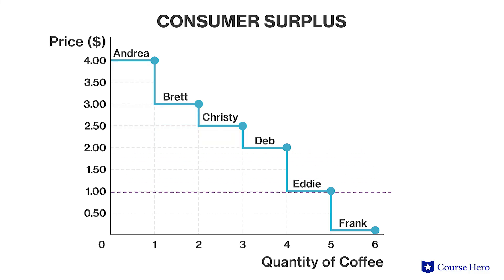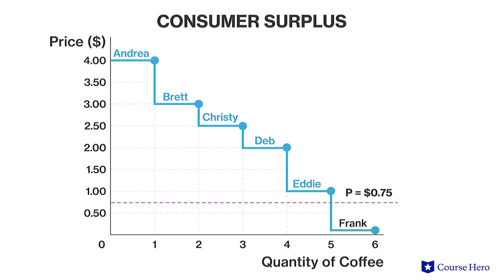If the price falls to 75 cents, there would be five individuals willing to buy a cup of coffee. Andrea, Brett, and Christie would still be interested in purchasing the coffee because they were willing to purchase it at a higher price. With the new lower prices, Deb and Eddie are both willing to purchase a cup of coffee, thus the quantity demanded for coffee would increase. Andrea, Brett, and Christie will see an increase in their individual consumer surplus, while Deb and Eddie enter the market and add their own new consumer surplus to the total consumer surplus for the market.